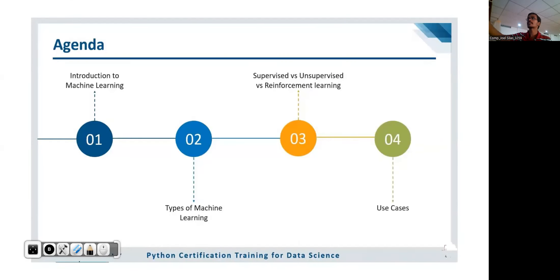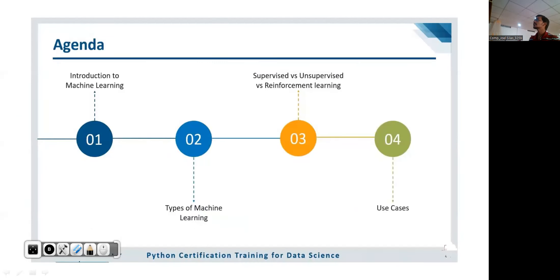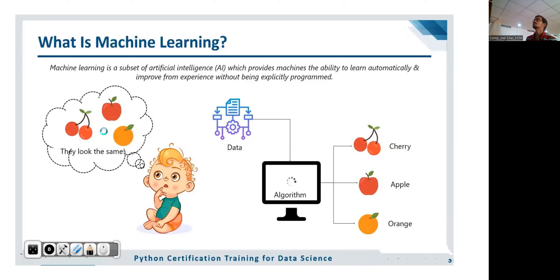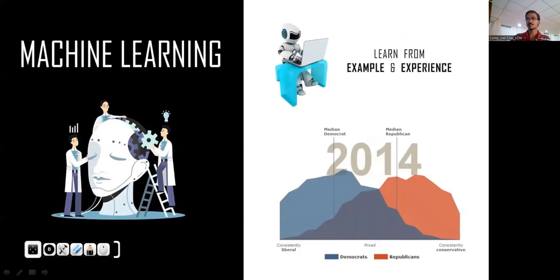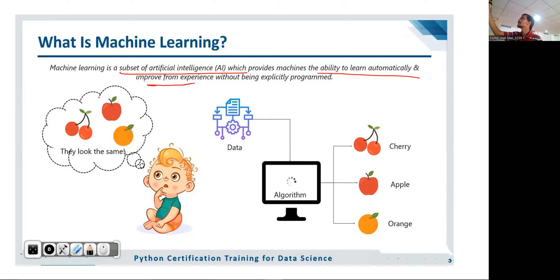In this session, let us see an introduction to machine learning, then types of machine learning, the difference between supervised, unsupervised, and reinforcement learning, and some use cases and secondary topics as well. Machine learning is a subset of AI — a subset of artificial intelligence — which provides machines with the ability to learn automatically or implicitly as a function of improvement in experience, without being explicitly programmed.